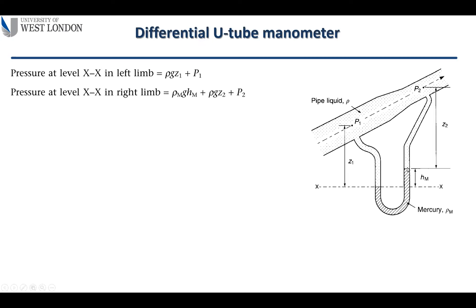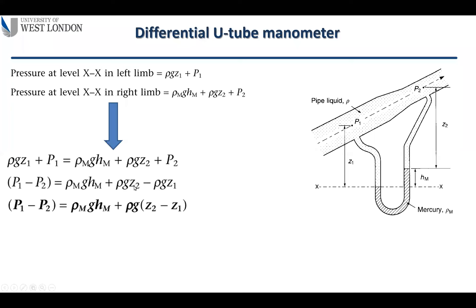For the right limb, part of it contains mercury and the rest contains the pipe liquid. We write the pressure contribution from the mercury as rho_m*g*h_m, and the pipe liquid contribution as rho*g*z2, then add P2. Equating the left and right expressions gives: rho*g*z1 + P1 = rho_m*g*h_m + rho*g*z2 + P2.